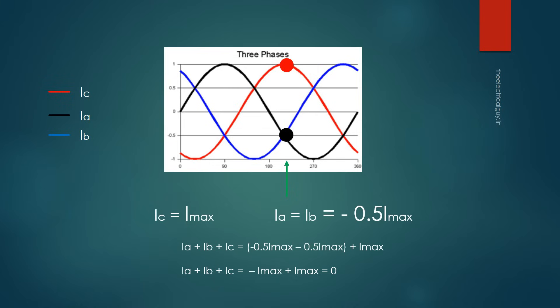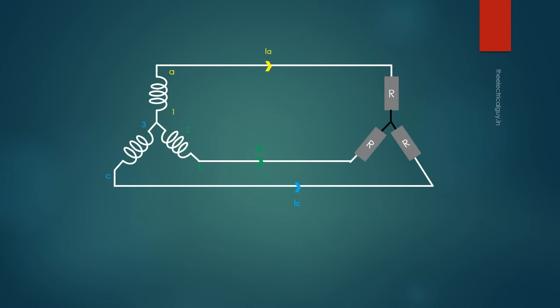However, the load shown in the circuit must be identical if you want to remove the neutral conductor. If the load is not identical, removing the neutral conductor can cause unequal voltages across the load. So in an ideal situation where the load is equal, the current flowing through the neutral conductor is always zero — a very common question in technical interviews. Where the load is not equal, a neutral must be provided. You might have heard of a 3.5 core cable — that 0.5 core is your neutral conductor.